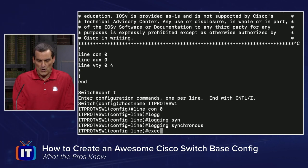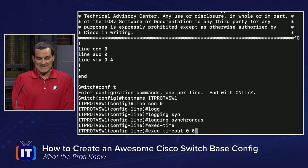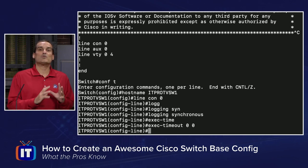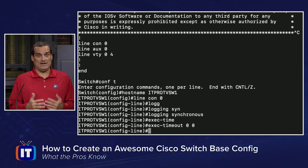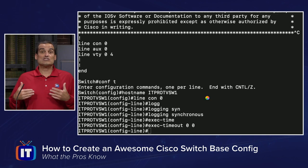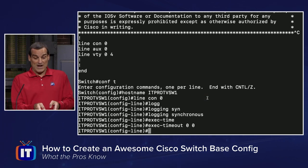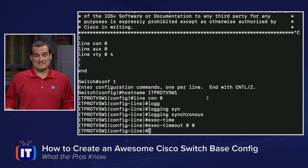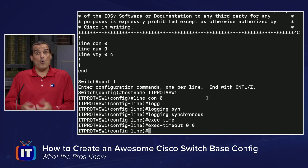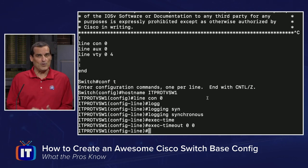On lab-based configurations we're going to set the exec timeout to zero space zero. In production, you'd want the timeout to be pretty aggressive — maybe even two minutes — so that if you walk away from the switch, someone can't walk up and start wreaking havoc. In a lab environment, a best practice is to eliminate the timeout behavior with the zero-zero setting, because you'll often open a book or watch an ITProTV episode while studying, and you don't want it timing out while you're doing that.